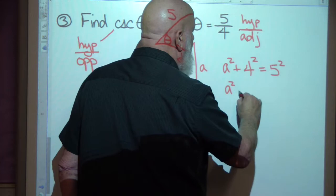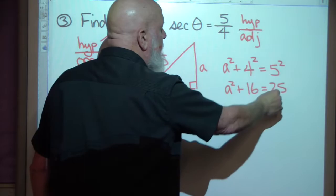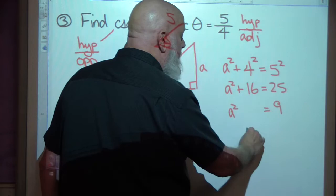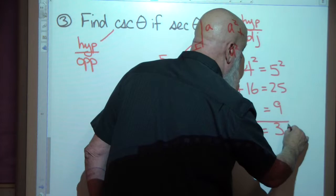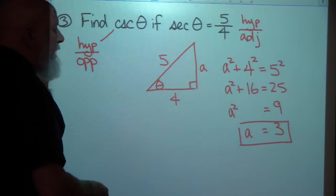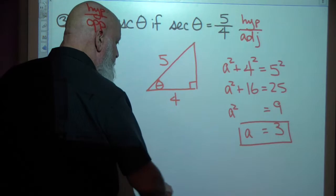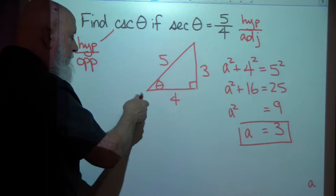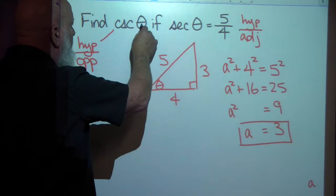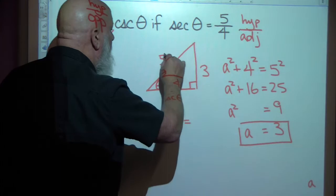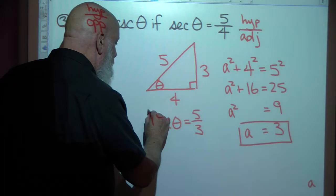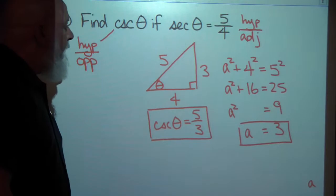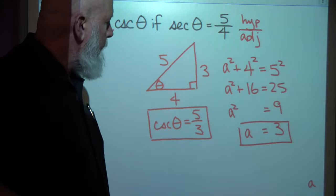Subtract 16 from both sides and we get a squared equals 9. Take the square root of both sides: a equals plus or minus 3. We ignore the negative root because we're looking for the length of a side of a triangle, and length is never negative. So a equals 3. The cosecant is hypotenuse over opposite, which would be 5 over 3. Checking — 5 over 3. Yay.